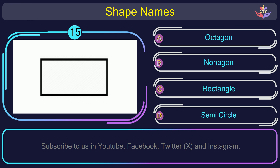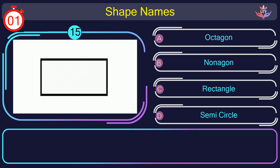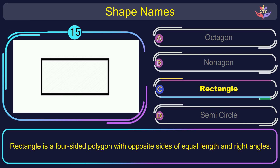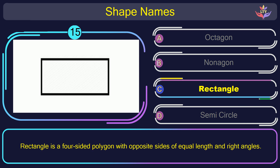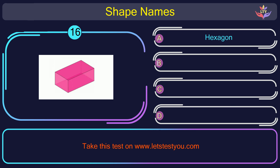Question number 15. What is the name of the shape in this picture? The correct answer is option C. Rectangle. Rectangle is a four-sided polygon with opposite sides of equal length and right angles.